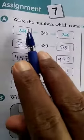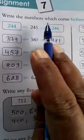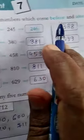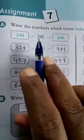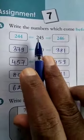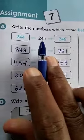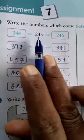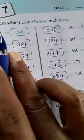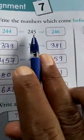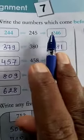Question number A. Write the numbers which come before and after. To find the before number, you will subtract 1 from the given number, and to find the after number, you will add 1 in the given number.